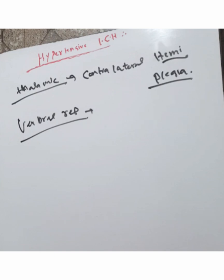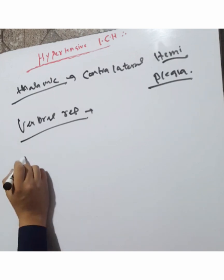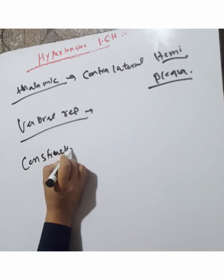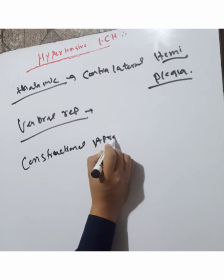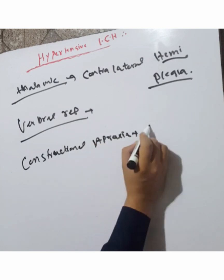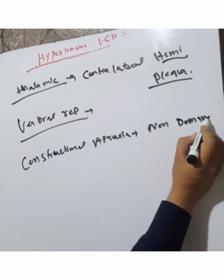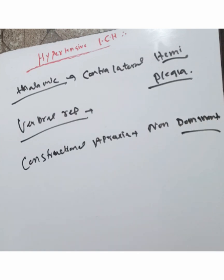Constructional apraxia or mutism may occur in some cases when the non-dominant hemisphere is involved. When the non-dominant hemisphere is affected, constructional apraxia may develop.